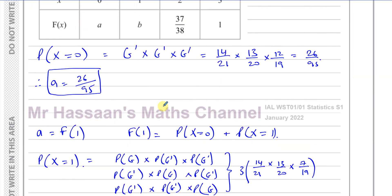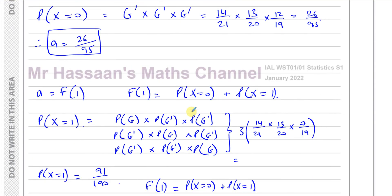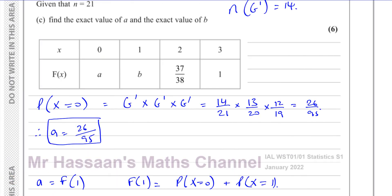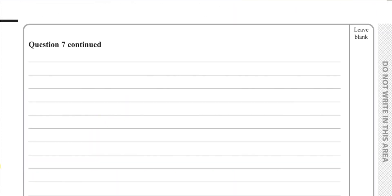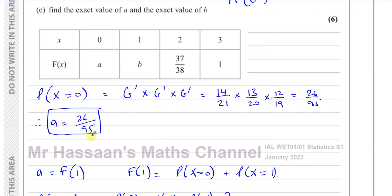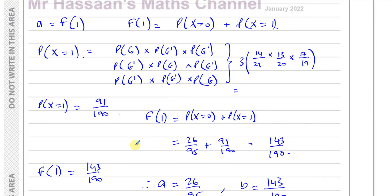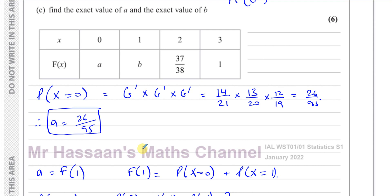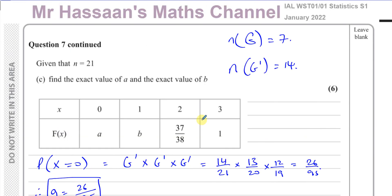That's the answer to part c, and that concludes this question and this paper. Other questions from this paper or from the topic of discrete random variables can be found by clicking the links on screen. You can also subscribe to my channel. Thank you for watching, and see you soon.